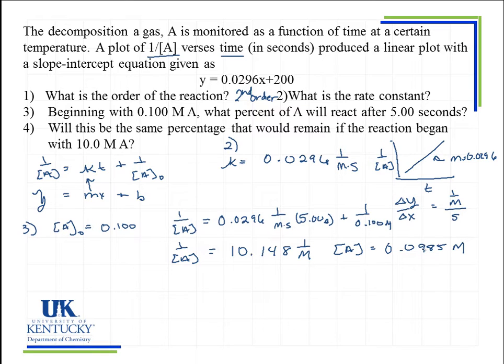Now that is not the answer to the question. The question says, what percent of A will react? So let's figure out how much actually reacted. Well, if we started with 0.1 and we finished with 0.0985, we will have a value of 0.001 molar that reacted. So this is how much we started with, this is how much we finished with. We subtract that, this is how much had to have reacted.